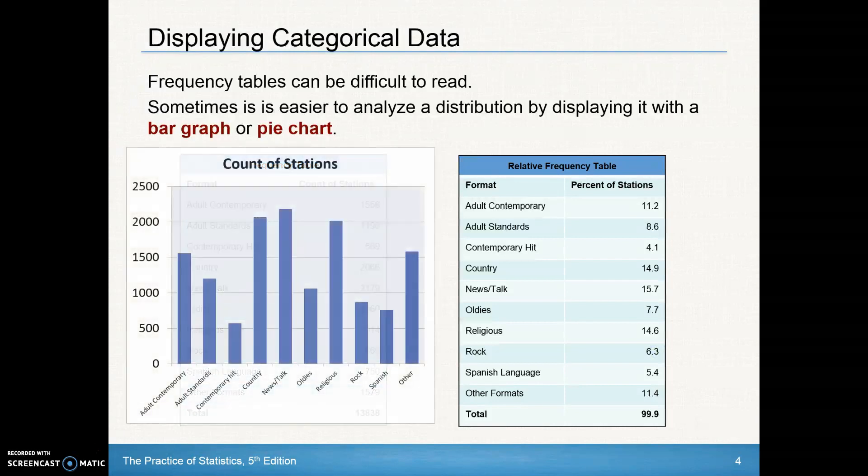So what that would look like here is a bar graph with each of the categories listed down below. Each bar is the same width. Also notice that these bar graphs start at zero to avoid any deception. If these started at 1,000, we'd have a lot of deception in the graph. We'd miss the contemporary hits, and some of these graphs would not be as comparable to the others.